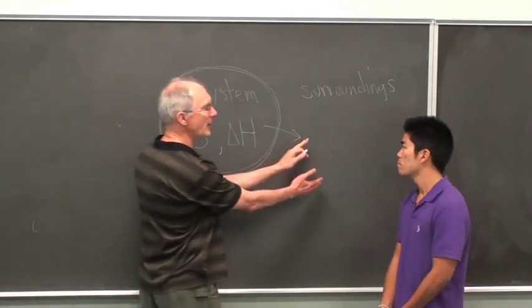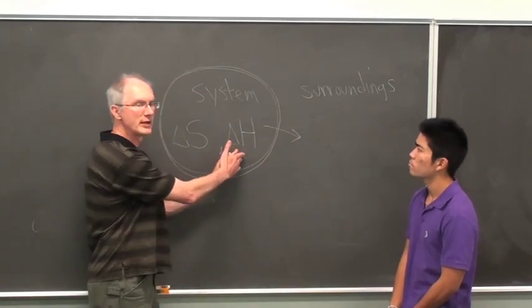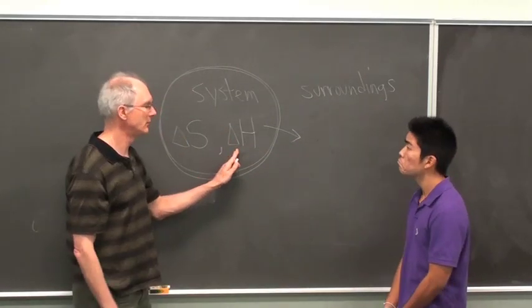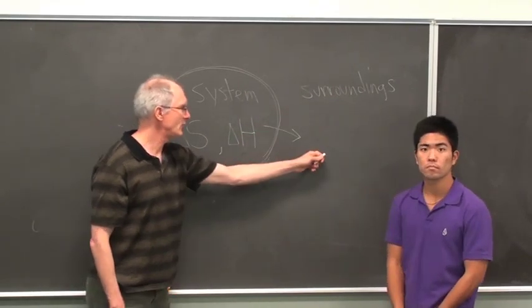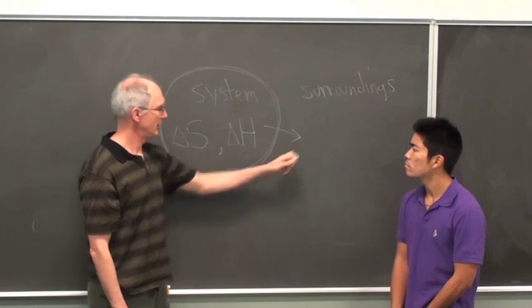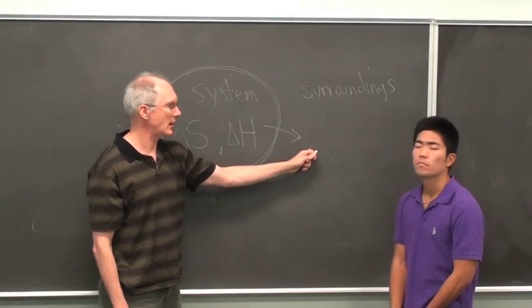Right, so we can define the entropy of the surroundings in relation to this delta H or enthalpy. So that's transferred out, entropy changes on the outside. If heat transfers in, well, that means entropy is being lost on the outside.